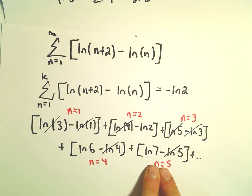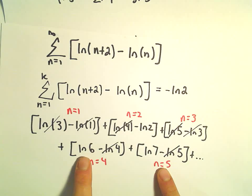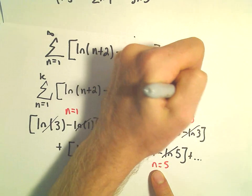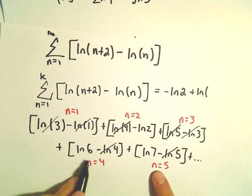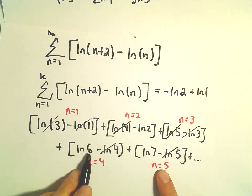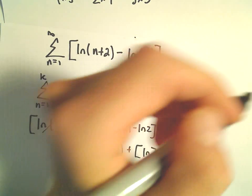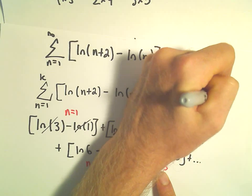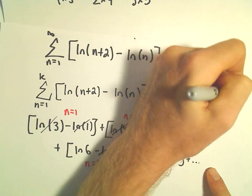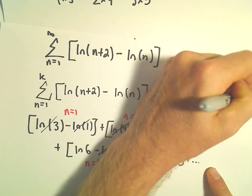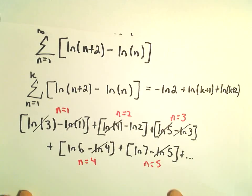...it looks like we're left with our negative ln of 2, and then we're left with ln of, so if we stopped at n equals 5, we've got one larger. So ln of k plus 1, and then it looks like we would be left with also ln of k plus 2.